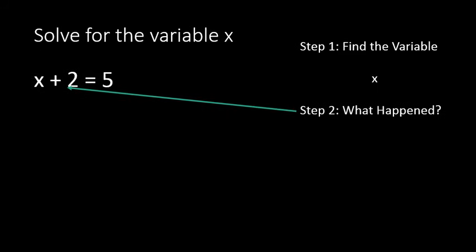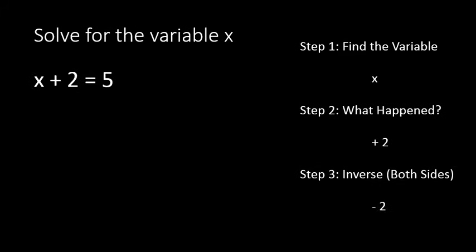Our variable is x. The next step is to say what happened to x or what is attached to x. In this case, what's attached to x is plus 2. That's what we're doing to x. We're adding 2. So now is when we need to know that inverse operation. What's the opposite of adding 2? Well, it's subtracting 2. We know that addition is opposite of subtraction.